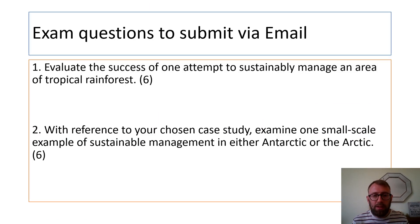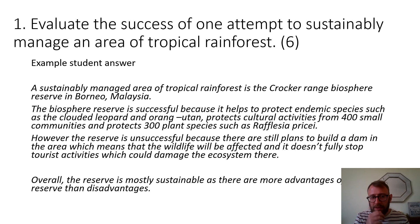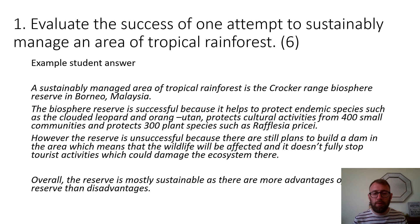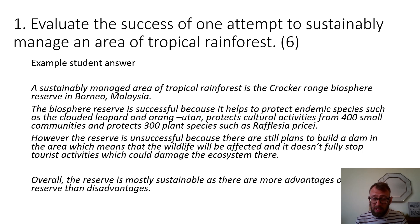Now for the exam questions you need to submit via email — a lot of the same mistakes are being made in both areas. Here's an example of an exam answer sent by one student: 'A sustainably managed area of tropical rainforest is the Crocker Range Biosphere Reserve in Borneo, Malaysia. The reserve is successful because it helps protect endemic species such as the clouded leopard and orangutan, and protects cultural activities of 400 small communities and 300 plant species.' Fantastic — really good place-specific detail. However, it's missing a key thing: where's the explanation? It needs to show why this is then sustainable. In the second paragraph, however, the answer mentions the dam and tourist activities but lacks place detail and doesn't develop the ideas fully.